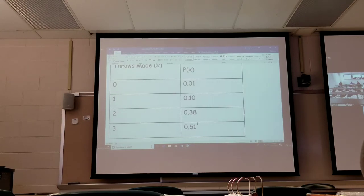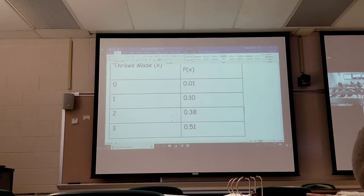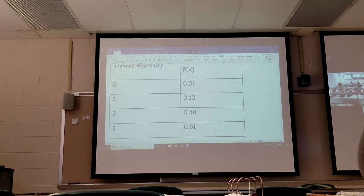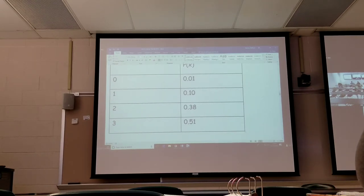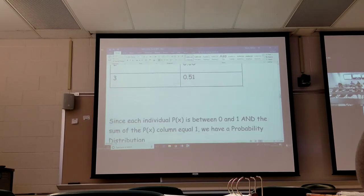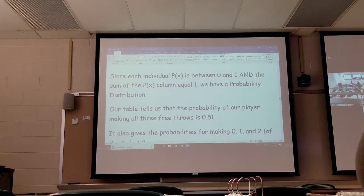They might and they might not. But they have a higher probability of making all three than even missing one. Because the probability that they miss at least one is 0.49. It's not a lot less, but I've got a better shot of them making all three than missing any. So I would bet on that. If I have a wider option, I would say they're going to make two or three shots, and then I've got an 89% chance of being right.